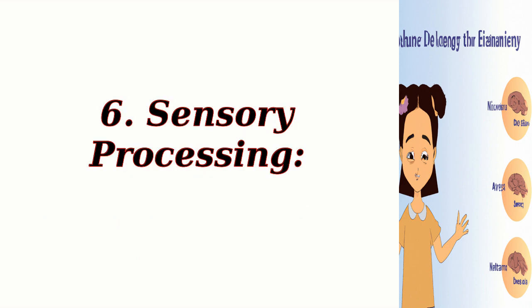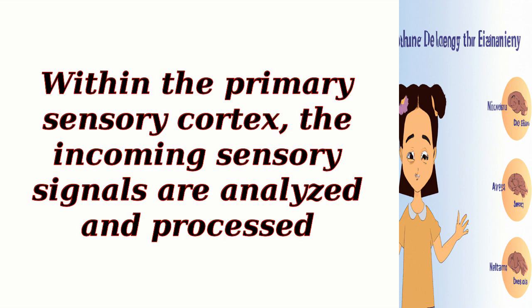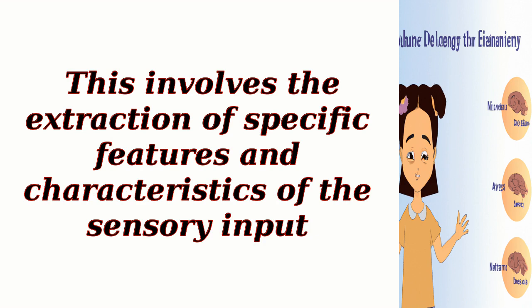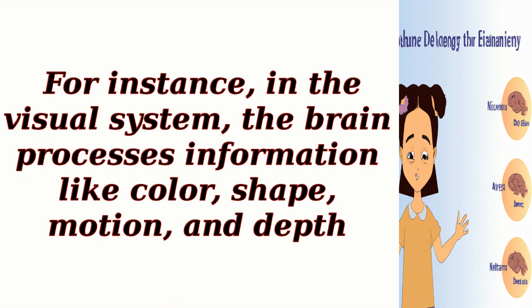6. Sensory Processing. Within the primary sensory cortex, the incoming sensory signals are analyzed and processed. This involves the extraction of specific features and characteristics of the sensory input. For instance, in the visual system, the brain processes information like color, shape, motion, and depth.